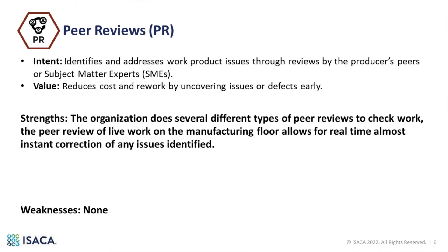One way this could be an actual strength is if it looks something like this: the organization does several different types of peer reviews to check work. The peer review of live work on the manufacturing floor allows for real-time, almost instant correction of any issues identified. This is a better example of a strength as it goes beyond what the model is asking for while explaining the additional benefits and value that the organizational unit is seeing from their processes.